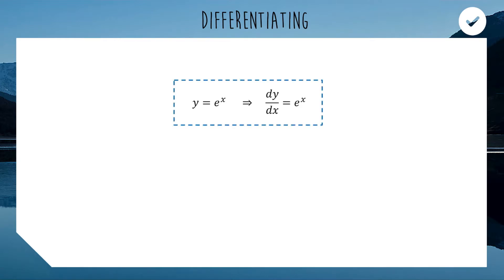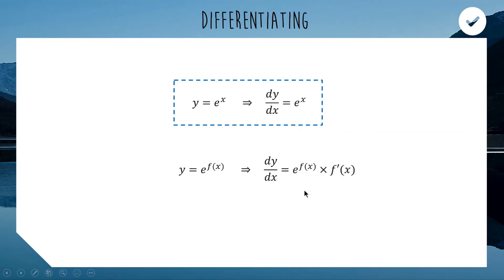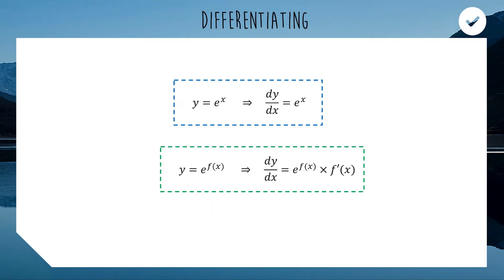This property gets a little more complex when the power of the exponential is more complex as well. If it's just e to the x, the derivative is e to the x. But if we have something more substantial like e to the power of f(x) — maybe e to the x squared — what we do is keep the exponential term the same, e to the f(x), and multiply by the derivative of the power. It's similar logic to the chain rule: the function stays the same, and we multiply by the derivative of the power.